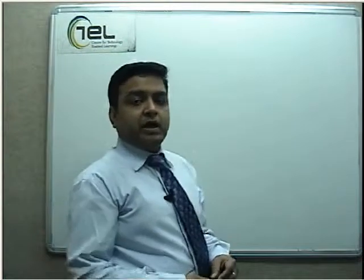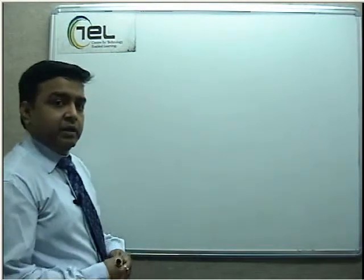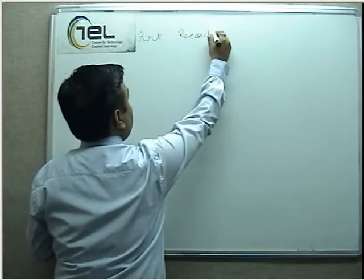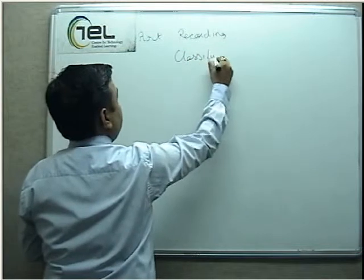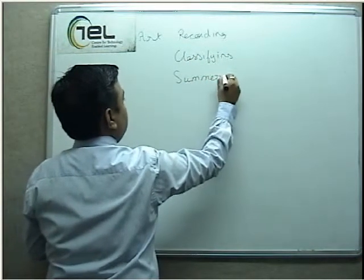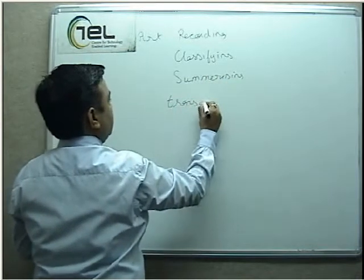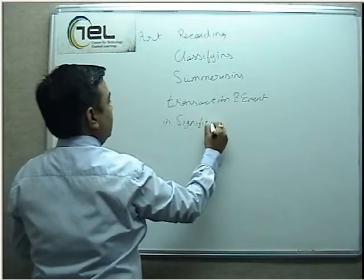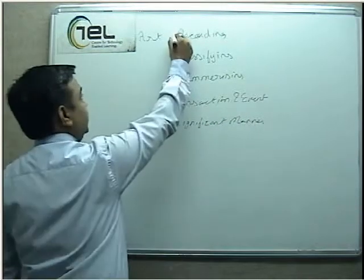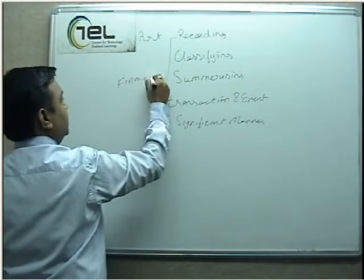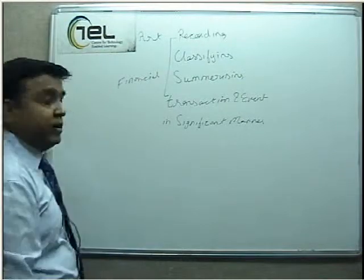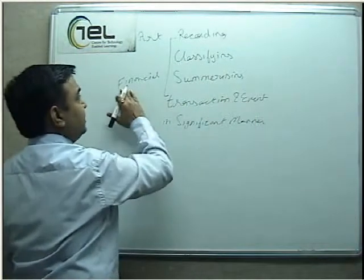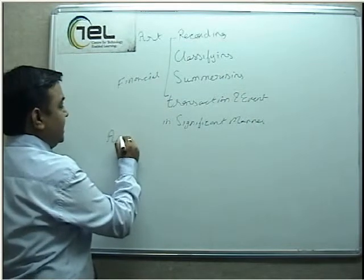Hello, today we are going to start with the chapter Accounting Cycle, that is Recording, Classifying and Summarizing. As you have already understood, accounting is the art of recording, classifying and summarizing the Transactions and Events in a significant manner. All these has to be done only for Financial Transactions because only Monetary Transactions are recorded in Accounts. This whole process is known as the Accounting Cycle.